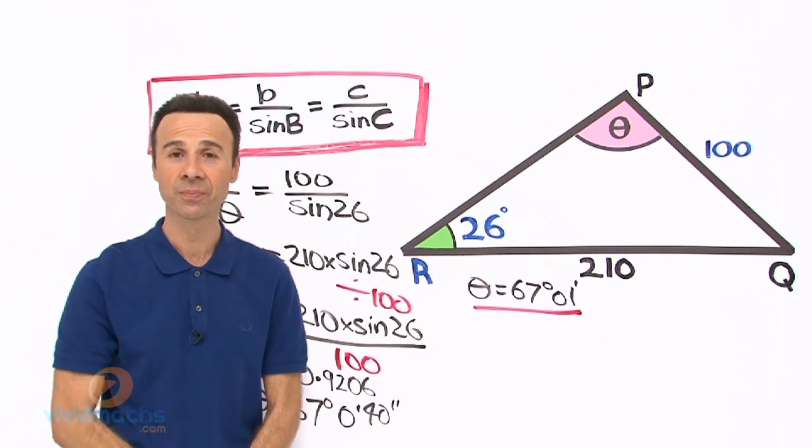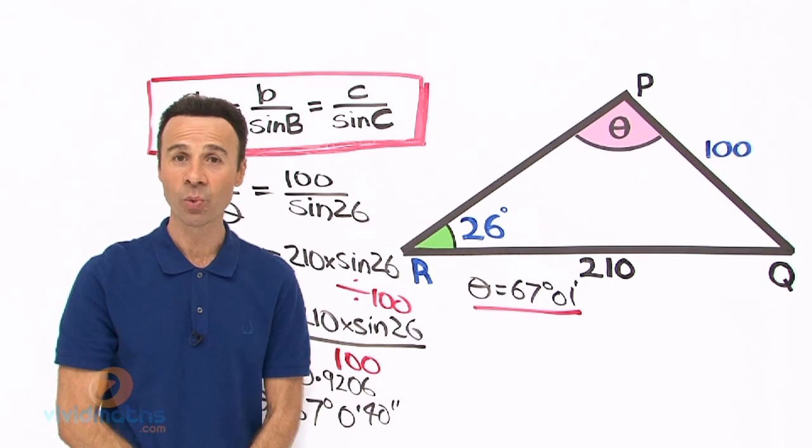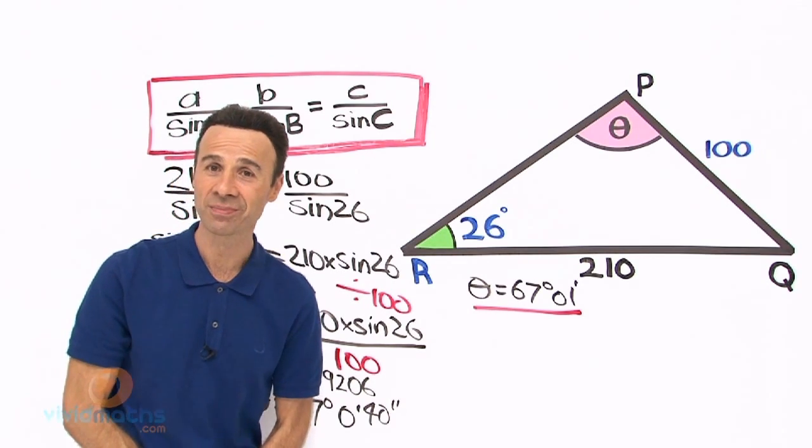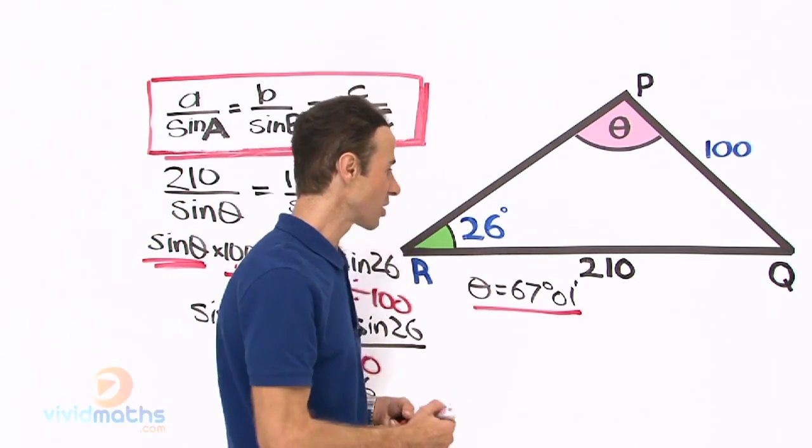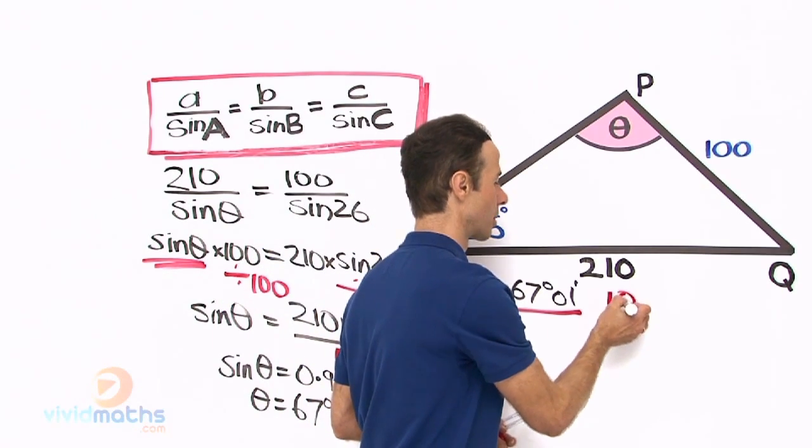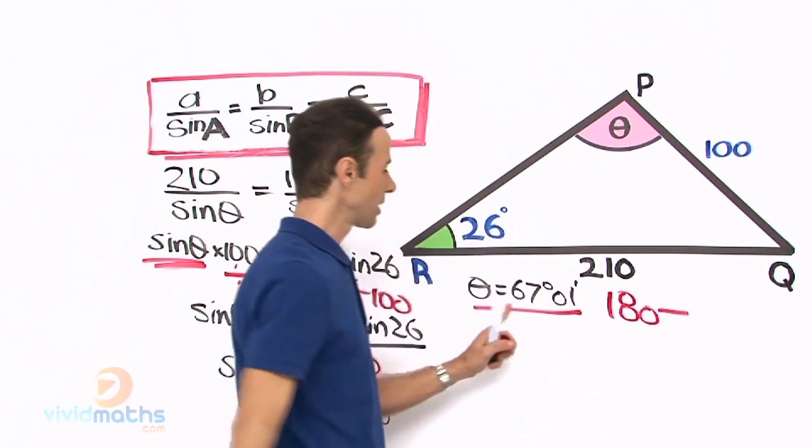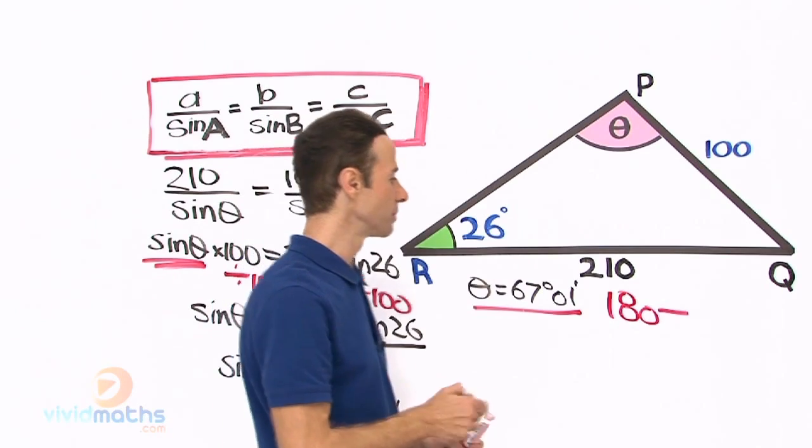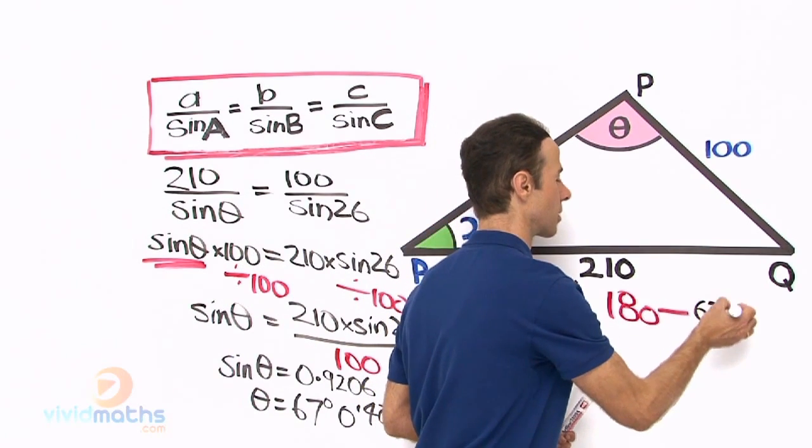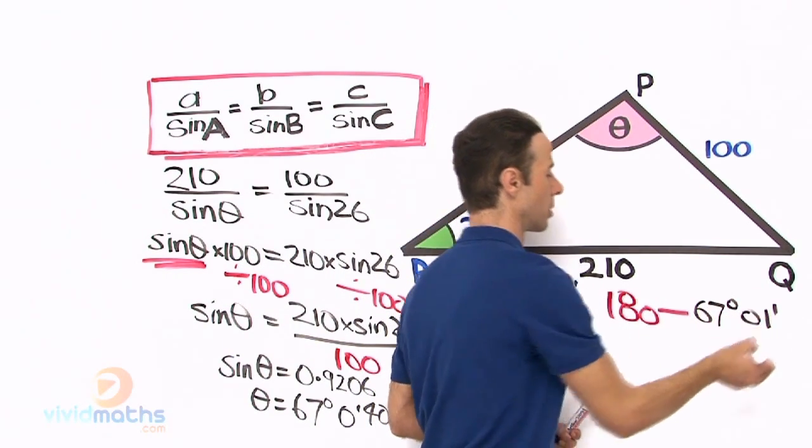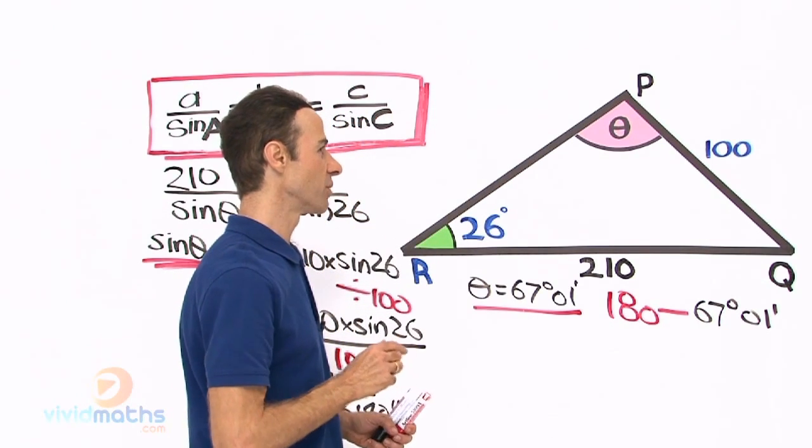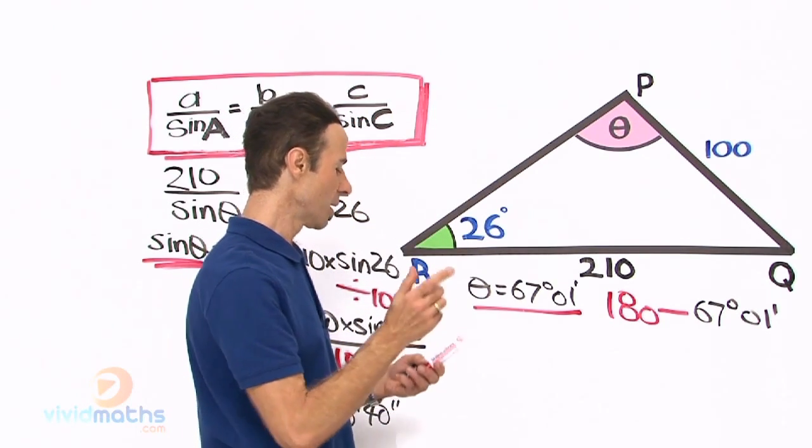So what we do quite simply is take it away from 180 degrees. That will make it obtuse. So let us do that. Let us go take away the 67 degrees 1 minute and that is going to give us a grand total, 180 minus 67 degrees 1 minute is going to give us the angle.